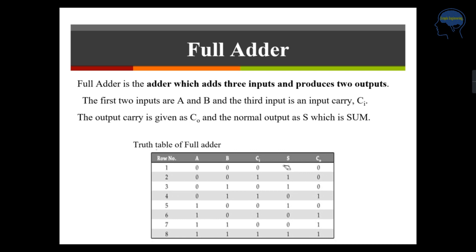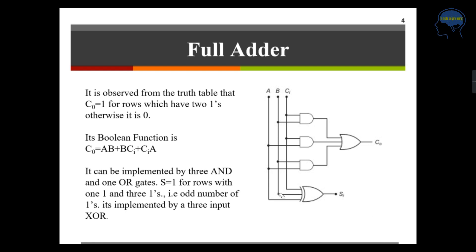Same like that if you take your sum column you can see that 1, 2, 3, 4 bits are 1. Its corresponding input you have to write for your sum expression. That is the way which you will get your boolean expression. Boolean expression for C naught is AB plus BC in plus C, A, C in.